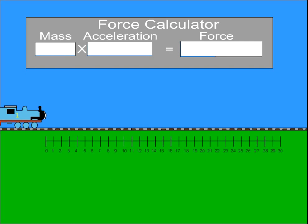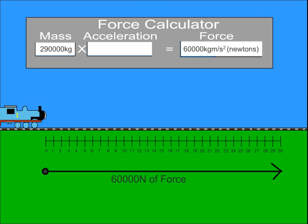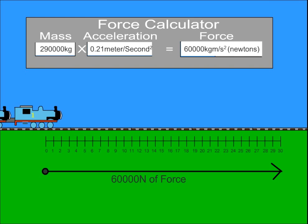If Edward gets behind Thomas again, and together they pull 50 train cars at 5,000 kilos each, the total mass will be 290,000 kilos. Our force, once again, will be 60,000 newtons. This results in a sloth-like acceleration of 0.21 meters per second squared.